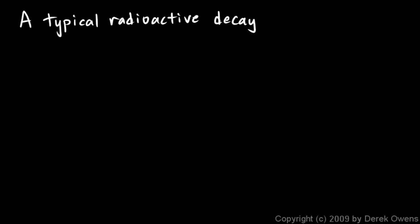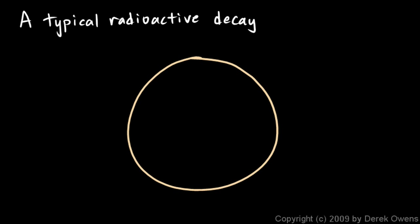Let's imagine a large atomic nucleus. I'll just draw a big circle. I won't draw all the little protons and neutrons, but I'll draw some of the neutrons here to make this point. Let's imagine there are a lot of neutrons, and large nuclei tend to have a lot of neutrons. Remember that protons are what allow the neutron to be stable. The neutron by itself is not stable, but protons around it will keep it from decaying.